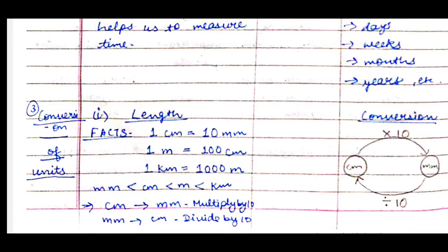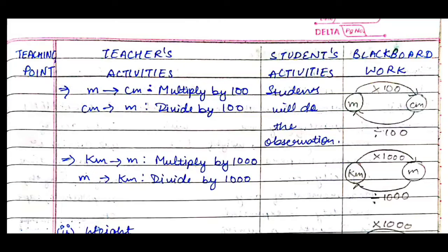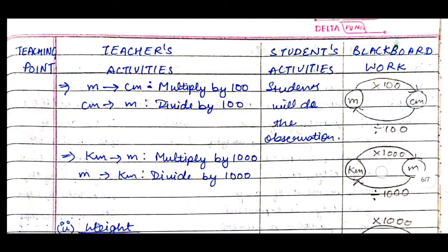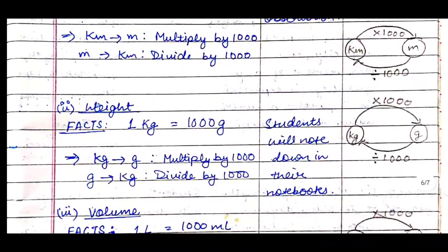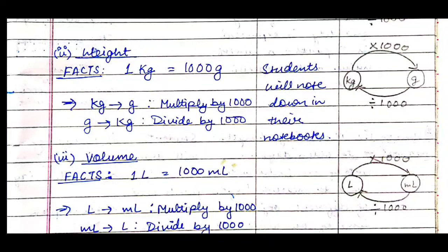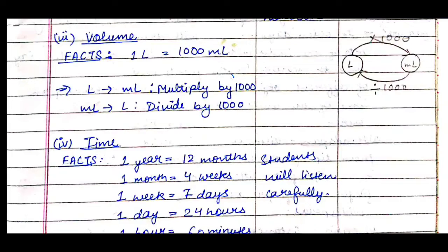To convert from meter to centimeter, multiply by 100; centimeter to meter, divide by 100. Kilometer to meter, multiply by 1000; meter to kilometer, divide by 1000. For conversion of weight: 1 kilogram = 1000 grams; kilogram to gram — multiply by 1000; gram to kilogram — divide by 1000. For volume: 1 liter = 1000 milliliters; liter to milliliter — multiply by 1000; milliliter to liter — divide by 1000. Students will note all these points.